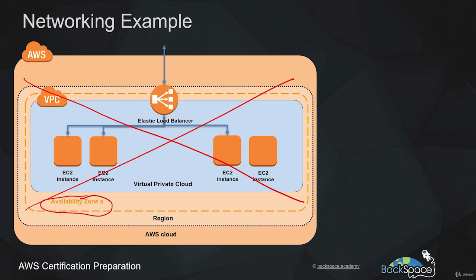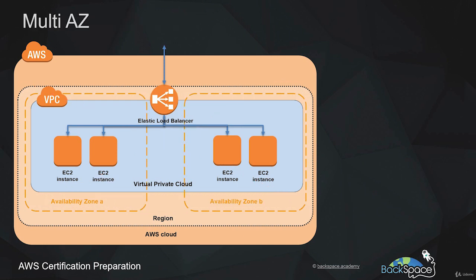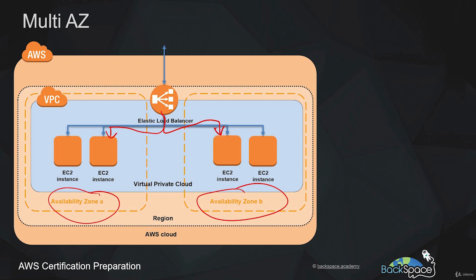That is why it's always desirable to have our architecture distributed across multiple availability zones. That way, if one availability zone goes down, the other one will continue to operate and the infrastructure within it will continue to respond to requests. We can launch EC2 instances in multiple availability zones, and our Elastic Load Balancing service can distribute traffic across multiple availability zones as well.